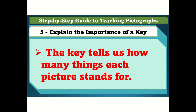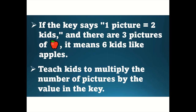Step five: explain the importance of a key. The key tells us how many things each picture stands for. If the key says one picture equals two kids, and there are three pictures of a red apple, it means six kids like apples. Teach kids to multiply the number of pictures by the value in the key.